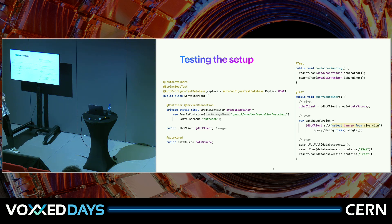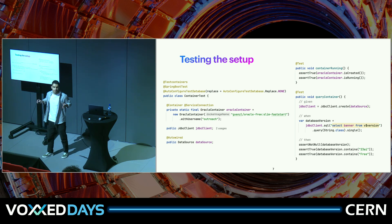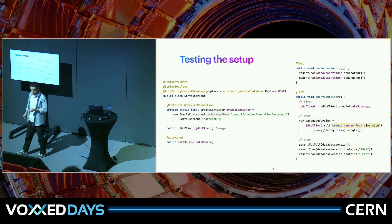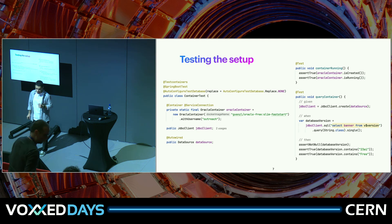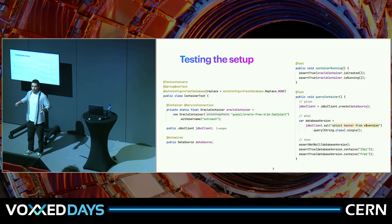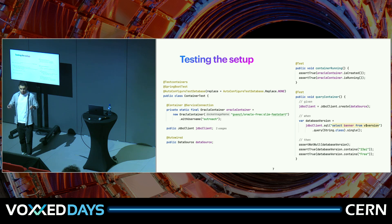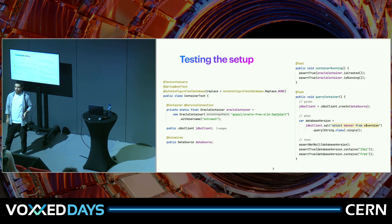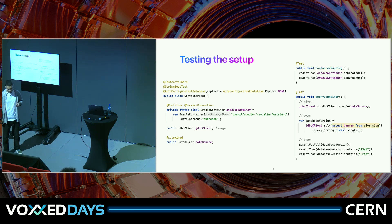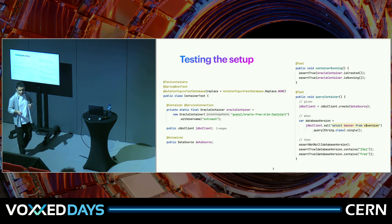With the configuration in place, let's validate the setup. I auto-wire a JdbcClient with the provided datasource, then assert that the container is running. Afterwards, I verify that the database in the Docker image is indeed the correct one by creating a JdbcClient and querying the banner for the database version. If that comes back okay, the setup is confirmed working.